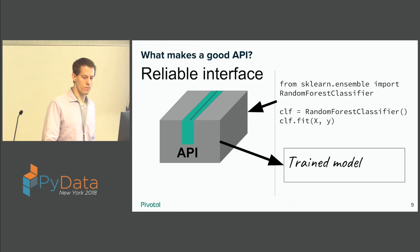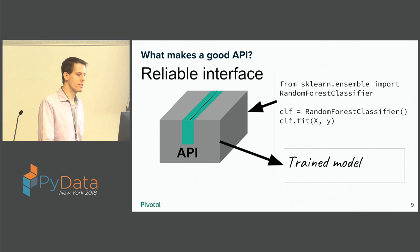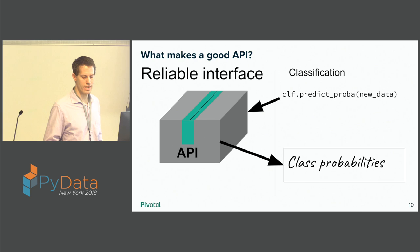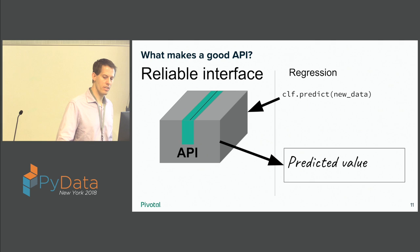Scikit-learn is something everyone uses and loves, and one of the things that makes it great is that reliable interface. You instantiate a classifier, you have a .fit method with data in a certain format and you get a trained model. You take a trained model, you can do predict_proba, and as long as your new data has the same shape as the training data, then you get class probabilities. Or if it's regression, you can do .predict and get a predicted value.